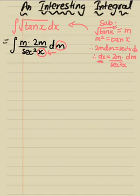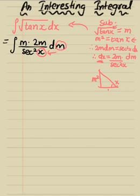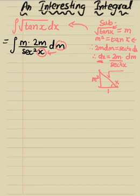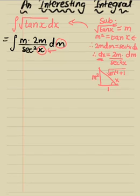I'm going to draw a right angle triangle and call this angle x. We know tan x equals m², so the opposite side is m² and the adjacent is 1. Using the Pythagorean theorem, the hypotenuse is √(m⁴ + 1). Using this triangle, let's find sec²x — sec x equals √(m⁴ + 1) over 1.